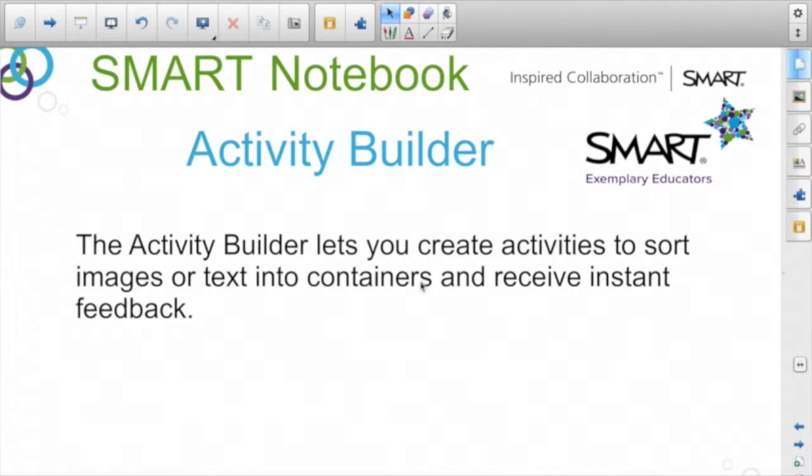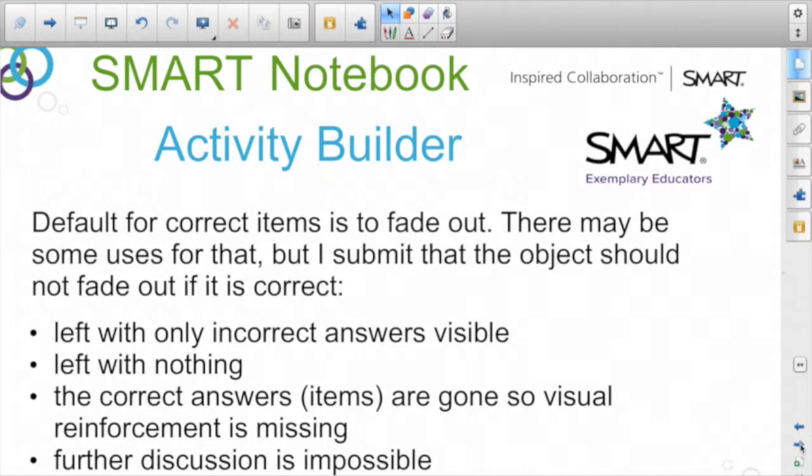So the default when you create an Activity Builder activity, the default for correct items - items that go into the correct container - is for them to fade out. Maybe there are uses for that sometimes, but I think that it's probably not the best thing to do if it's the correct answer. And here are a couple reasons why: if all the correct answers fade out and the incorrect answers don't, then you're left with only the incorrect answers visible when you're done. I don't know if that's the correct visible feedback that you want to give. Or depending on the activity, you could be left with absolutely nothing except the containers showing. The correct items are gone, they fade out, so there's no visual reinforcement - that part is missing. You don't see what those correct answers are, and because they're gone, further discussion of why they're correct or whatever is impossible.